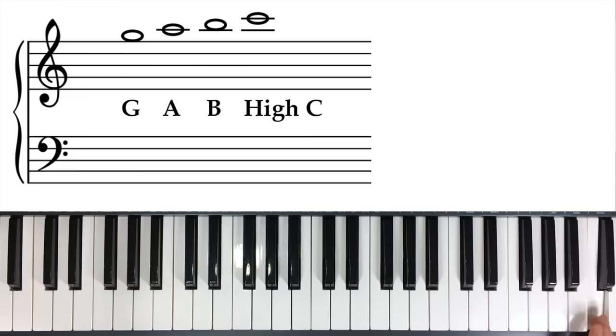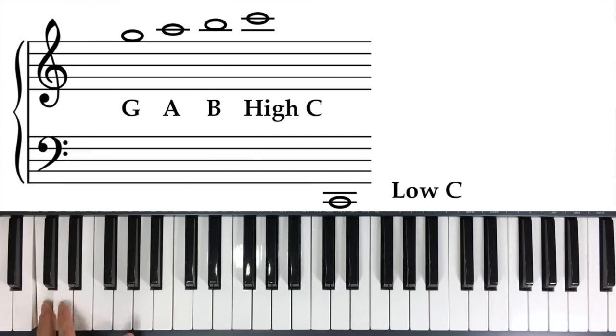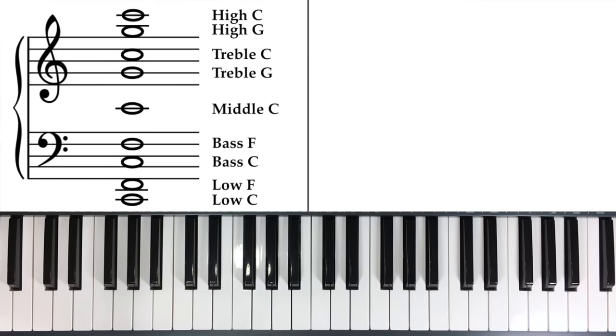So we have high C, which is two ledger lines out. Can you guess what low C is going to look like? Well, it's always going to be like a mirror, right? It's always going to be an inverse. So two lines out is high C. Two lines out is low C. So two lines below the bass clef. So there we have it.